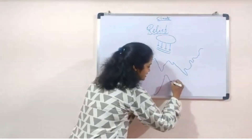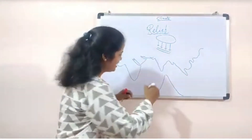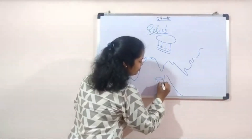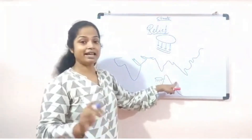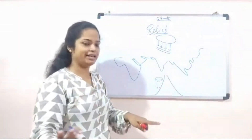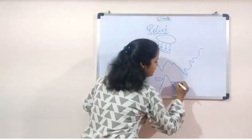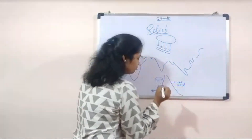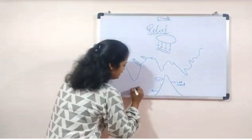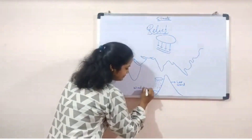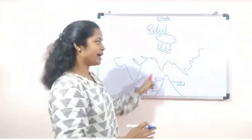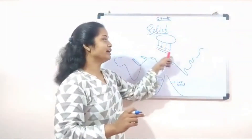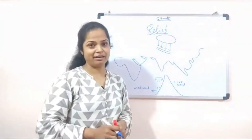How does orographic rainfall happen? When clouds reach a mountain, one side of the hill gets heavy rainfall — that side is known as the windward side. The other side gets very little or no rainfall — that is known as the leeward side. Such orographic rainfall in India occurs because of the location of the Himalayan mountain range.